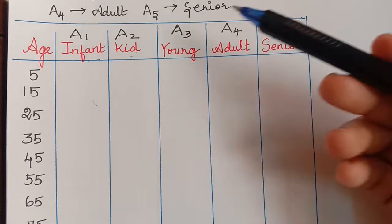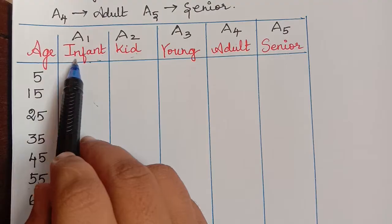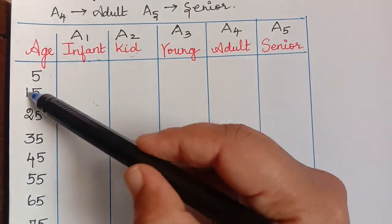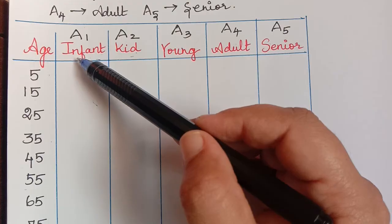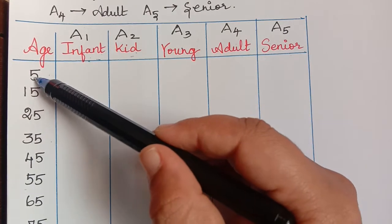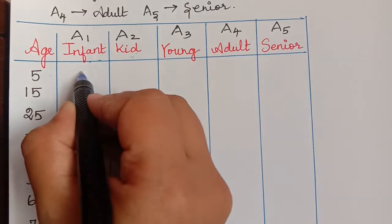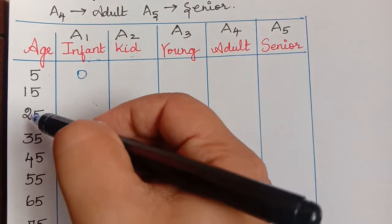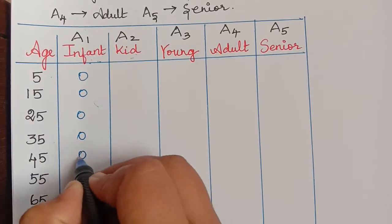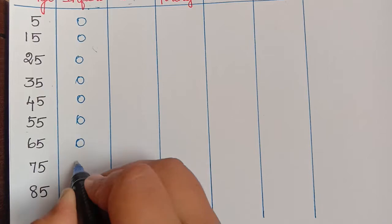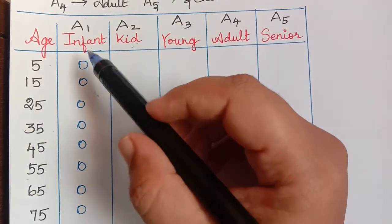For fuzzy set A1 (infant): since our age range starts at 5 and infants do not fall in these ages, the membership grade for all elements — 5, 15, 25, and beyond — is 0.